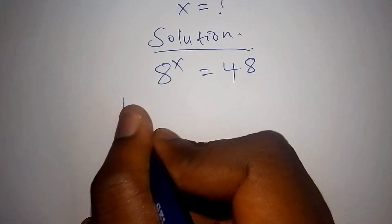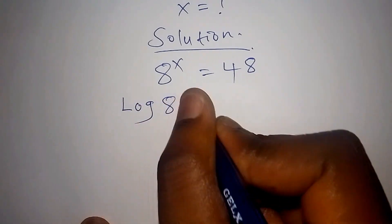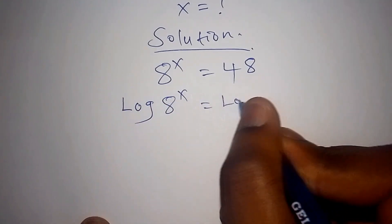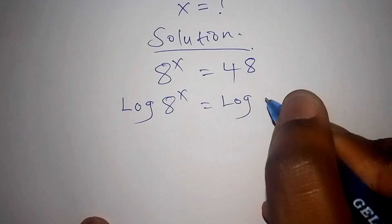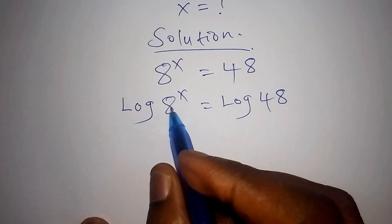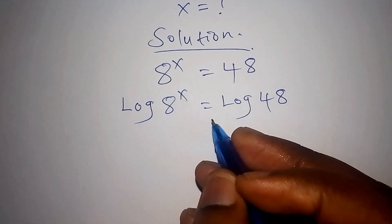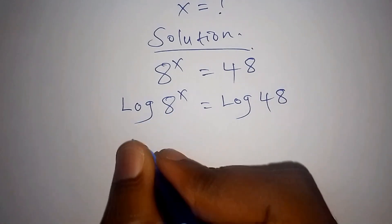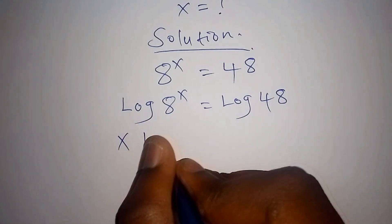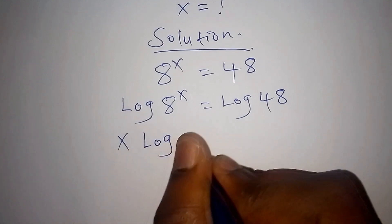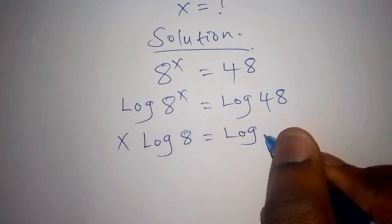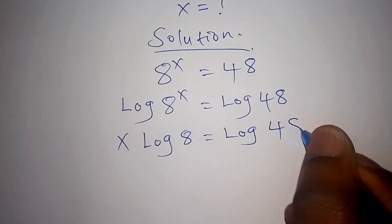So now we shall take the log of both sides: the log of 8 to the power of x is equal to the log of 48. The log of 8 to the power of x can also be written as x log 8, which is equal to the log of 48.